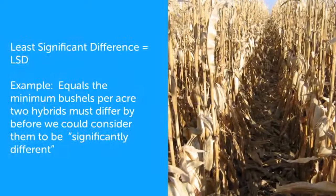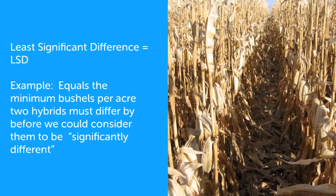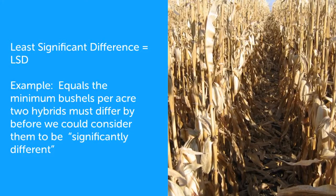A term commonly used in research is the Least Significant Difference, or LSD. In a hybrid variety trial, for example, this is the minimum bushels per acre that two hybrids must differ by before we would consider them to be significantly different.